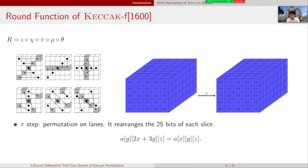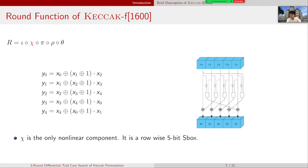The pi step is the permutation on lanes. It rearranges the 25 bits of each slice. Chi, which is the only nonlinear component, can be treated as a row-wise 5-bit S-box.